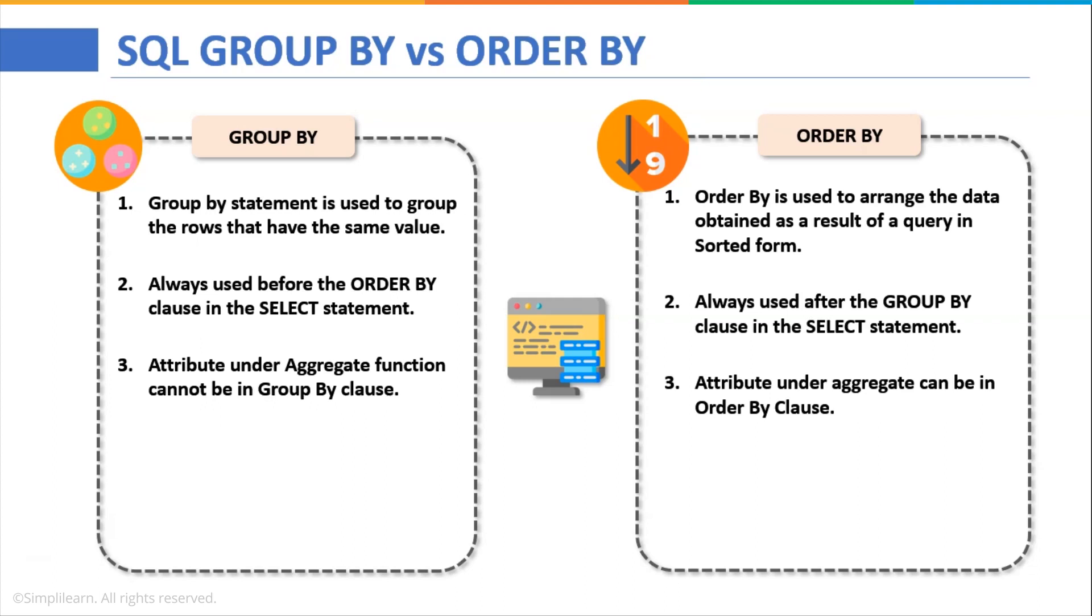Now in GROUP BY statement, the attribute under the aggregate function cannot be in GROUP BY clause whereas in ORDER BY the attribute under aggregate function can be in ORDER BY clause.